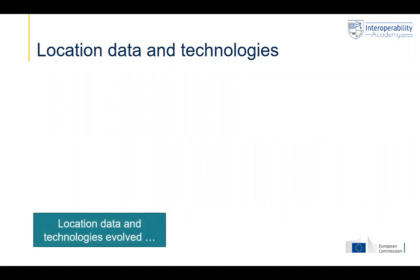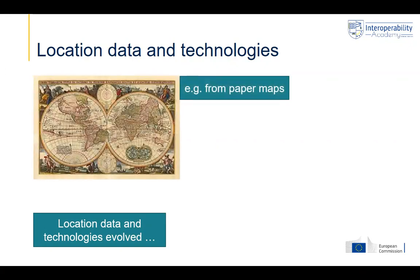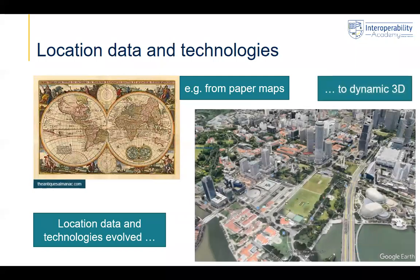What are location data and technologies? They have evolved. Everyone knows the traditional paper maps — a very old example, like the Michelin maps used for going on holiday. But that has evolved, where newer technologies are used to create dynamic 3D visualizations of our real world on our screen and computer. This is an example of Google Earth showing the city of Singapore with a lot of information.